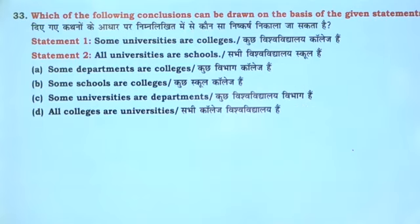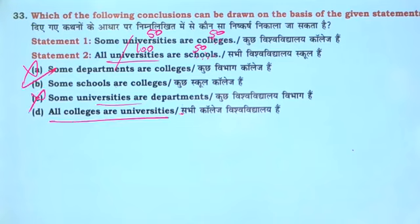Some universities are colleges, or universities are schools. Some universities are colleges — 50-50. University is 150. Some departments are colleges. Some schools are colleges — schools and colleges. University is 50-50. Some universities are departments — department and colleges are university. University: some universities or colleges — all colleges will be 100, but in college 50 — one second is correct.